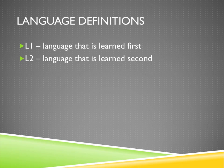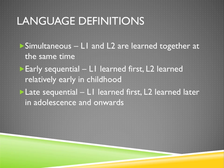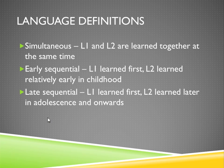L1 is the language learned first; L2 is the language learned second. We can have simultaneous L1/L2 acquisition, where they're learned together at the same time. Early sequential is where L1 is learned first and L2 is learned relatively early in childhood — this often happens with bilingual parents or early start programs. Late sequential is more typical for high school or college-age students, where L2 is learned much later in adolescence and onwards. It's much better if you can do the first two.